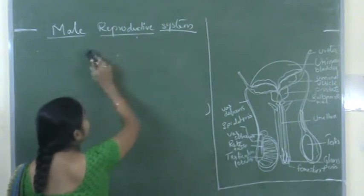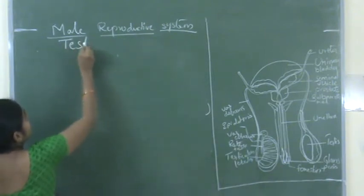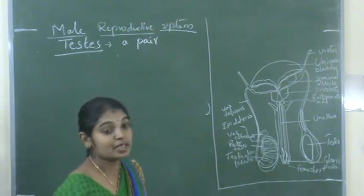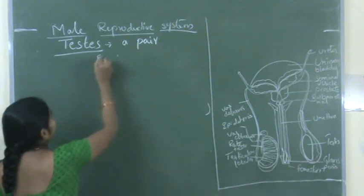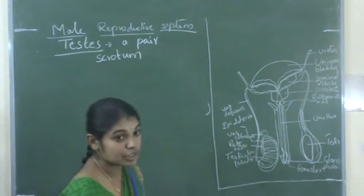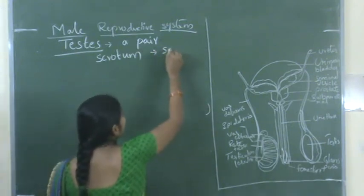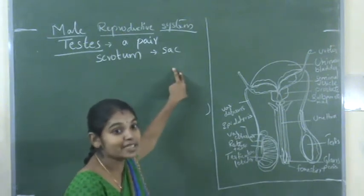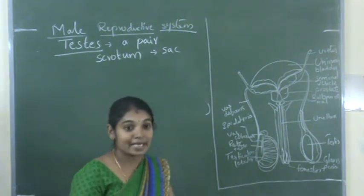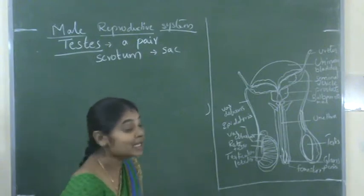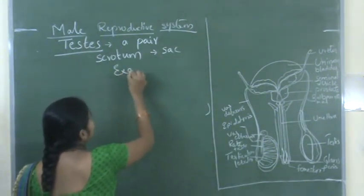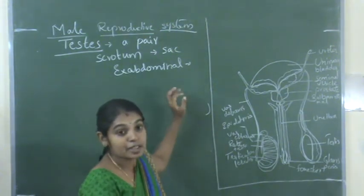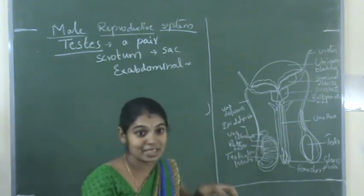Now we will look at the testes first. A pair of testes are present, enclosed in the scrotum. The scrotum is a sac-like structure which provides a space for the attachment of the testes. The scrotum is an extra-abdominal structure — it is present external to the abdominal cavity. This is essential for spermatogenesis, by providing a proper temperature for it.